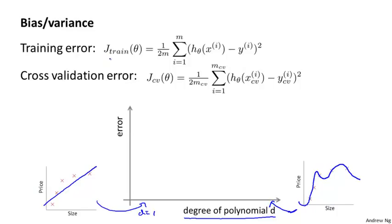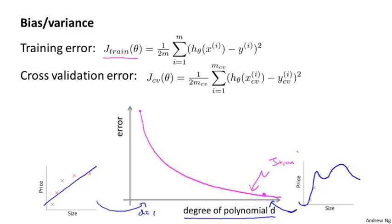Let's start with the training error. As we increase the degree of the polynomial, we're able to fit our training set better and better. So if d equals one, we'll have a relatively high training error. If we have a very high degree polynomial, our training error is going to be really low — maybe even zero — because we'll fit the training set really well. So as we increase the degree of polynomial, the training error J_train typically decreases with the degree of polynomial we fit to the data.